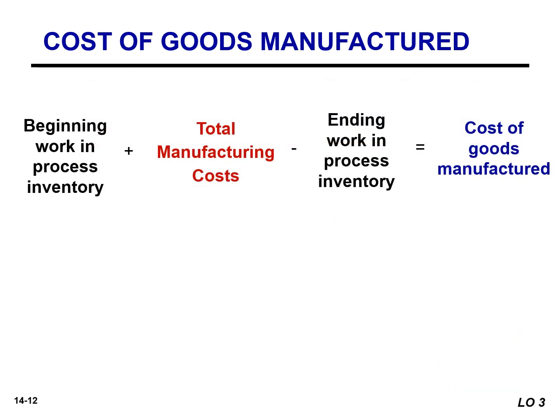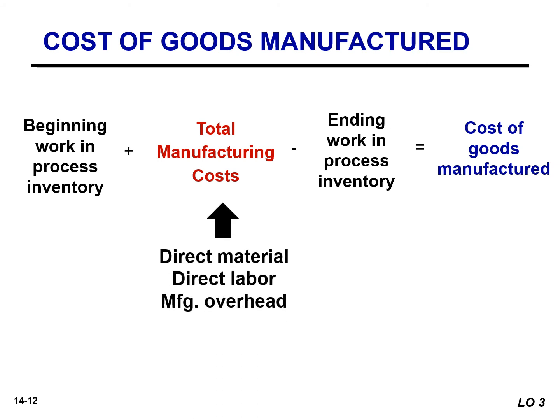You should be able to distinguish between total manufacturing cost and the cost of goods manufactured. The cost of goods manufactured is found by taking the beginning work in process inventory, adding our total manufacturing cost, and subtracting our ending work in process inventory. Our manufacturing costs are the sum of our direct material cost, our direct labor cost, as well as our manufacturing overhead.